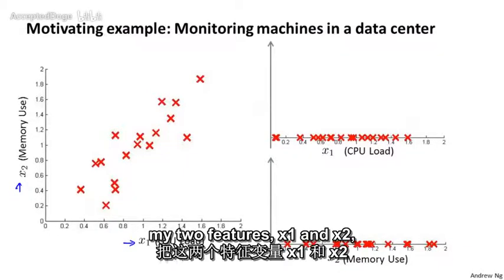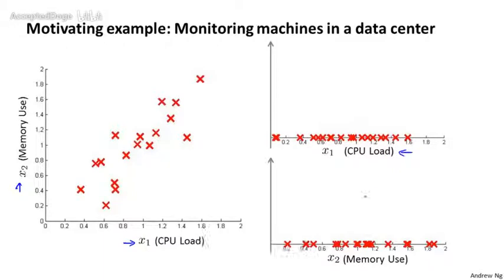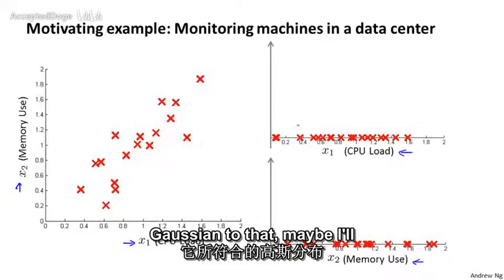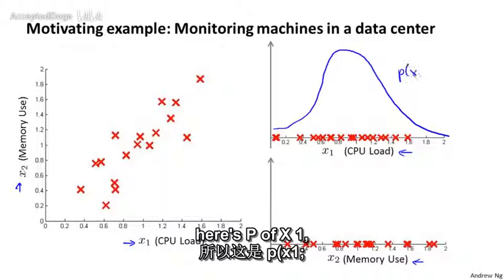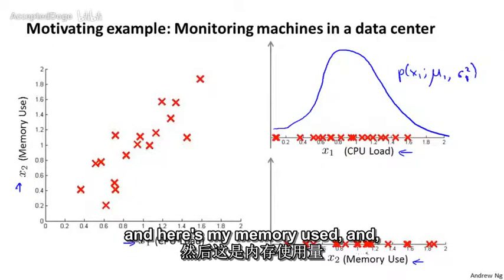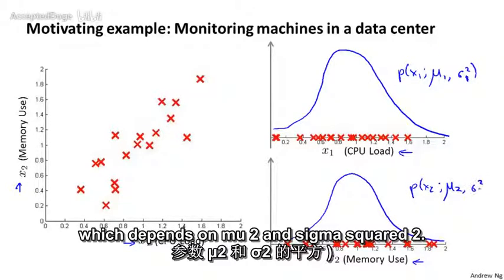So my two features are x1 which is the CPU load and x2 which is the memory use. So if I take my two features x1 and x2 and if I model them as Gaussians, then here's a plot of my x1 features, here's a plot of my x2 features and so if I fit a Gaussian to that, maybe I'll get a Gaussian like this. So here's p of x1, which depends on my parameters mu1 and sigma squared 1 and here's my memory use, maybe I'll get a Gaussian that looks like this. And this is my p of x2 which depends on mu2 and sigma squared 2. And so this is how the anomaly detection algorithm models x1 and x2.